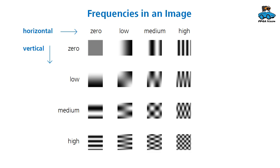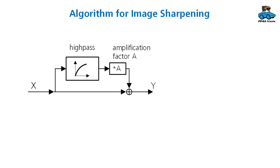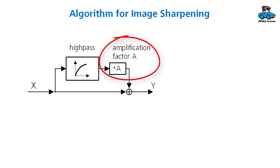For our sharpness algorithm, we want to amplify the higher frequencies to get a sharper image. So that would be around this region here. This is a block diagram for this approach. You have an input signal X and with a high pass filter you identify the high frequencies. Then you amplify them by a certain factor and add them to the input signal to get the output signal Y. The amplification factor allows to set the sharpness for your TV set to low, medium, high or switch it off.